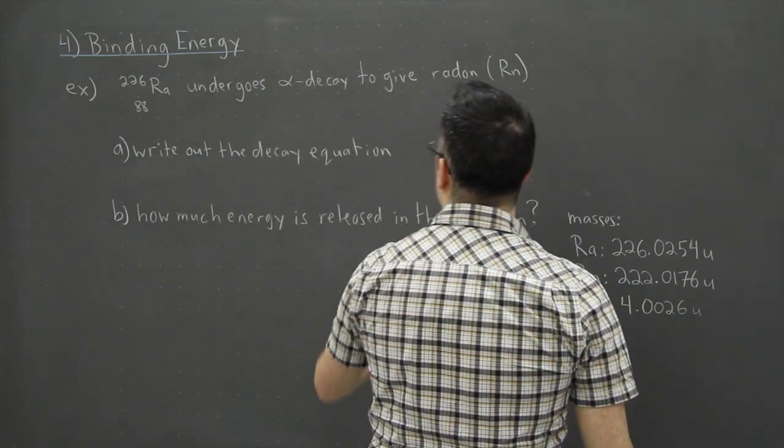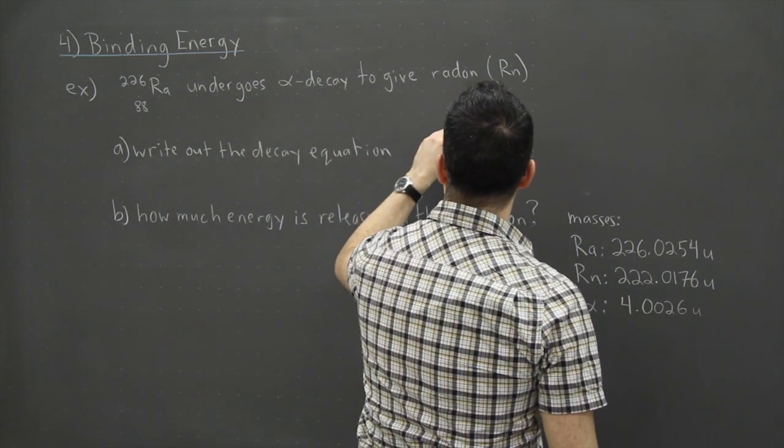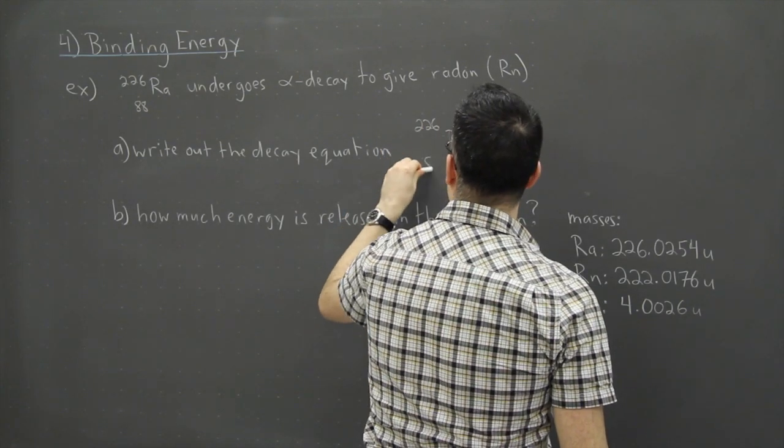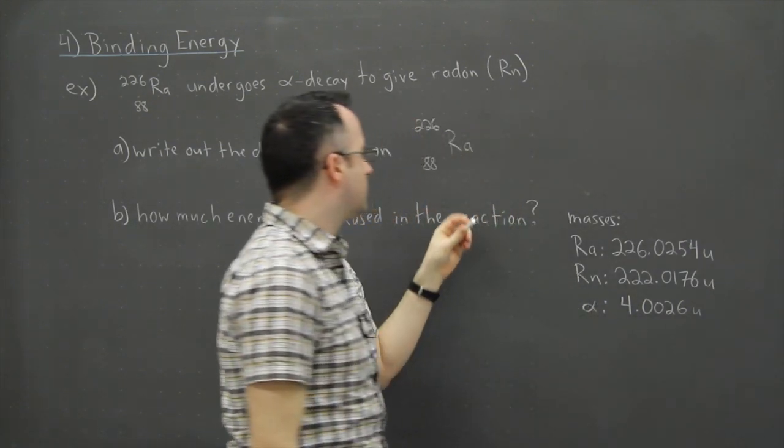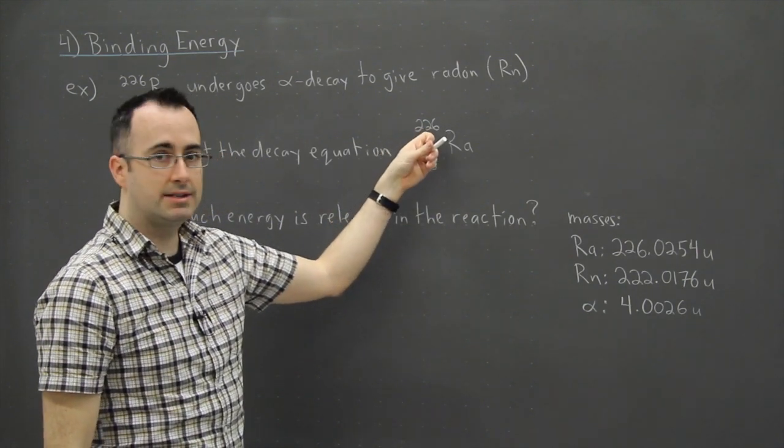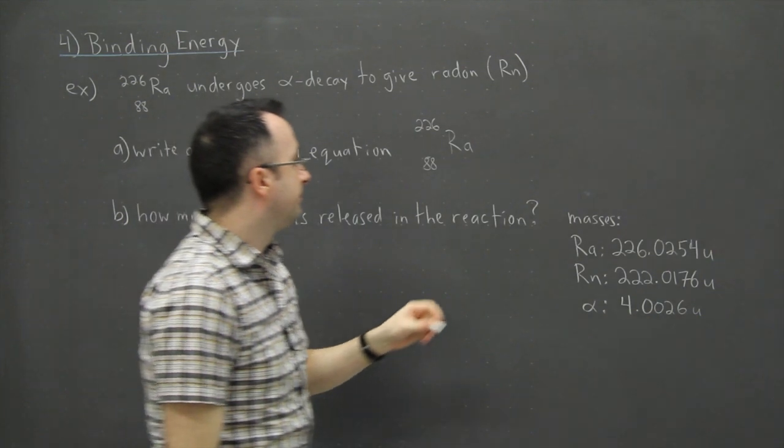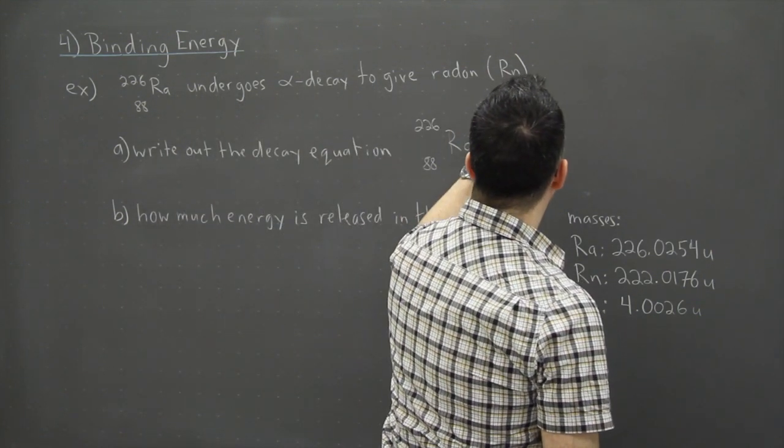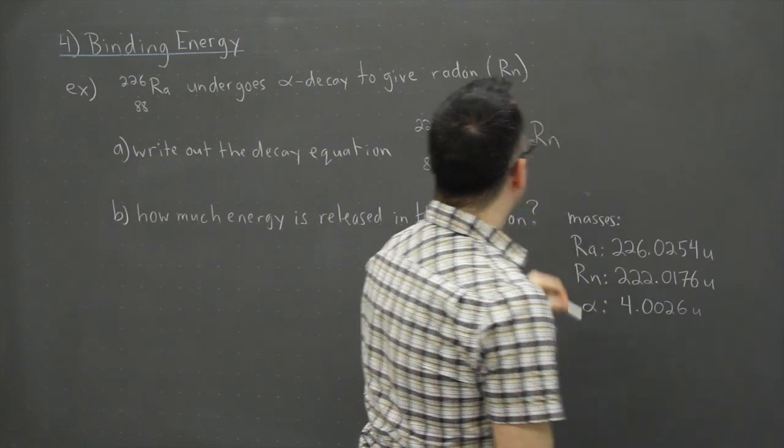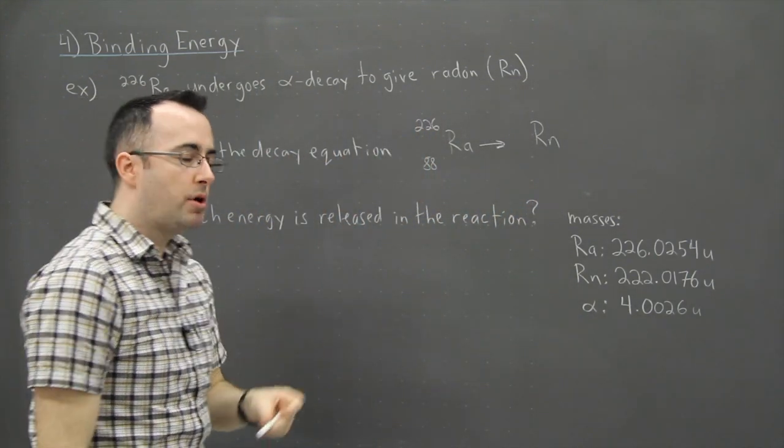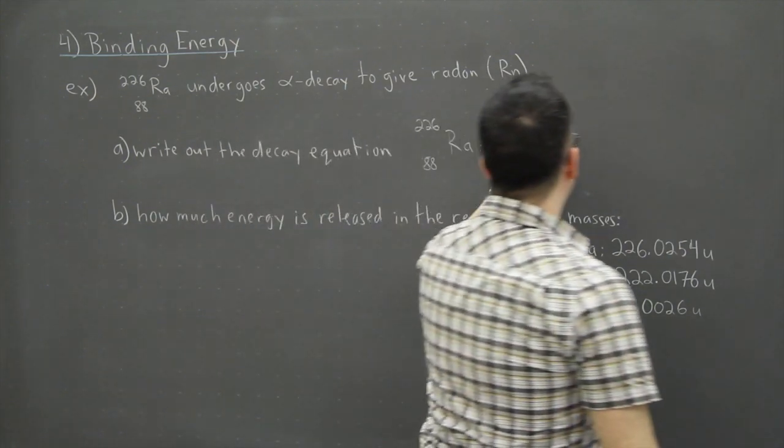If we want to write out the decay equation, well we know it starts out with radium-226 and this has 88 here. Remember this tells you the number of protons, and this 226, that's the number of protons plus neutrons. Now this goes to, we're told it's radon, so we're going to put an Rn, and we know it does alpha decay.